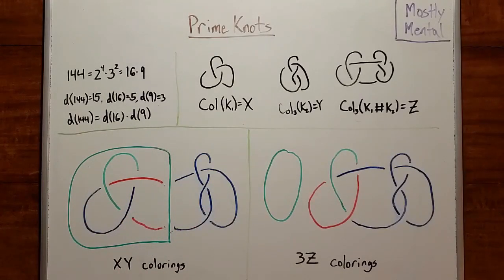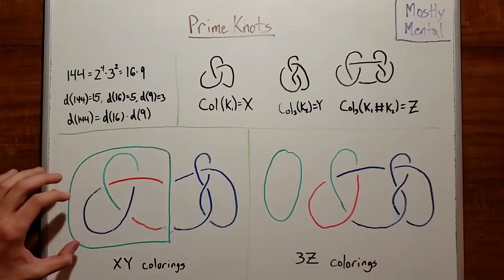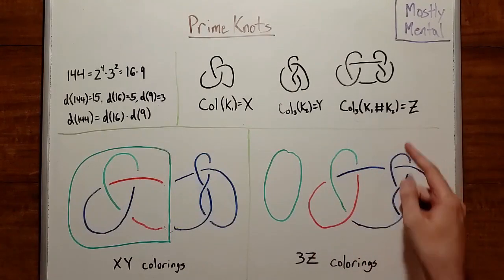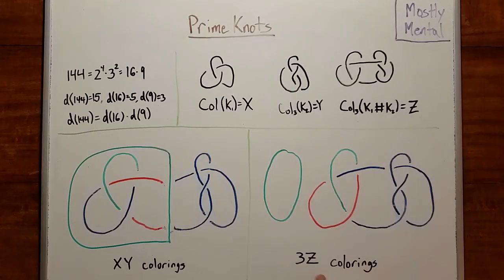And you can check that this is a reversible process, so there are still x, y ways to color this. But notice that this loop isn't actually attached to anything behind it. So we can just pull it off to the side and get something like this. And now we have two independent knots. The unknot has three colorings, all red, all green, and all blue, and the connected sum, by assumption, has z. So we have three z colorings for this configuration. And we said that's the same as the colorings over here, so we get that x, y equals three z. And solving, we get z is x, y over three.